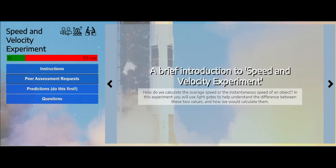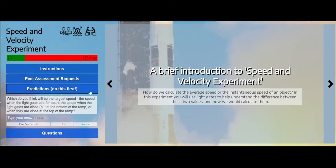And you've got these two bars down here. Now, these are the important things. So if I click on predictions, it comes up with a question: which do you think will be the largest speed? The speed when the light gates are far apart, the speed when the light gates are closed. So clearly, I need to do something with this experiment before I start.